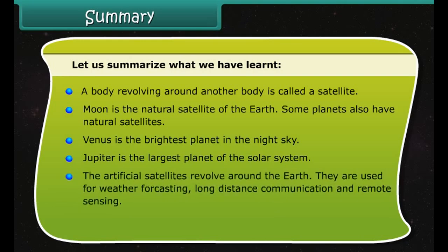Neptune lies just beyond Uranus and is the eighth planet of the solar system counting outwards from the Sun. Neptune is about the same size as Uranus and is the last of the large planets, and it also has some rings around it.